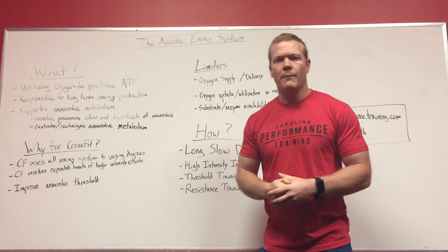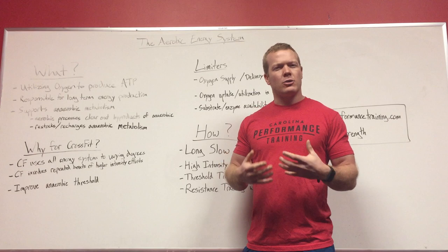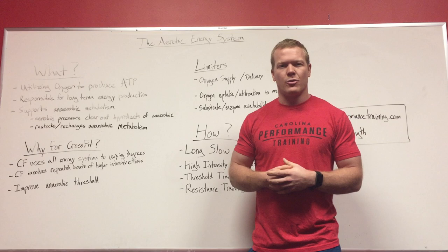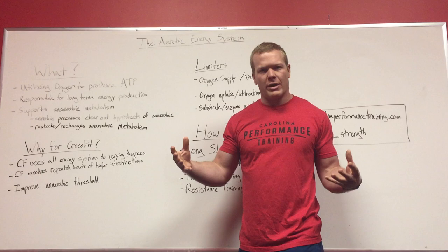What is the aerobic energy system? It's our body's way of utilizing oxygen to produce ATP — it's responsible for long-term energy production. Our body has three primary energy systems that are all turned on at all times, but depending on the intensity and duration of the activity, one will be the primary source for energy creation. The aerobic system is that primary source for lower intensity, long duration activity.